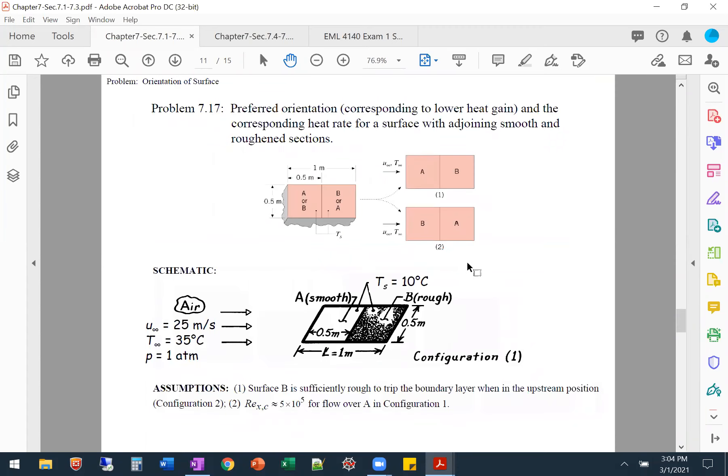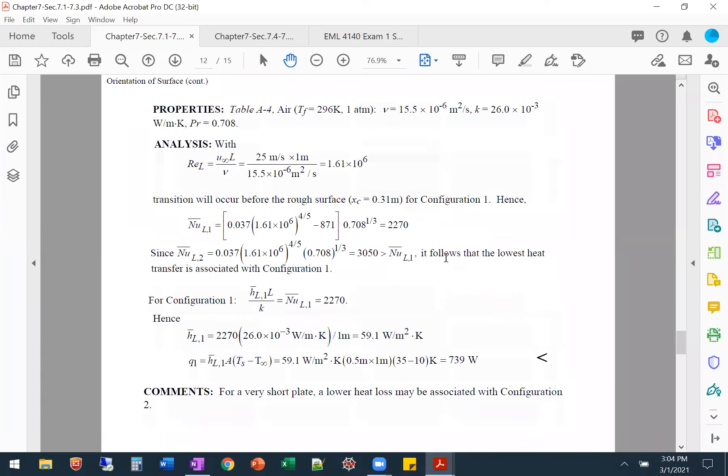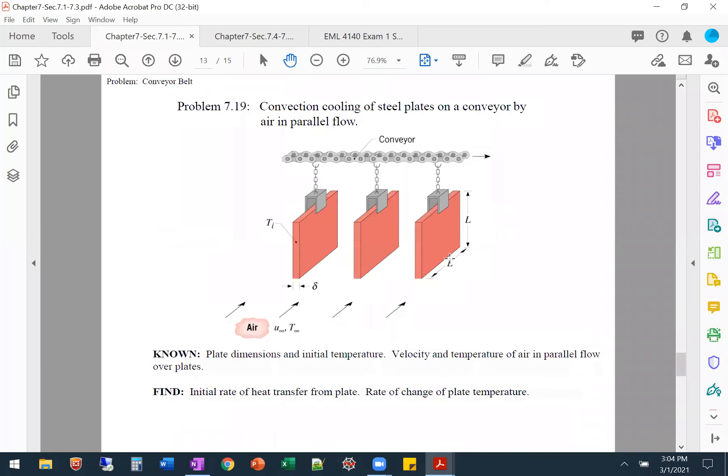Then we did example 7.17, a quick example where we had either the smooth or the rough surface first, and we had to figure out which had the lower heat gain. So we went through that and got our answer. Now we're on 7.19.